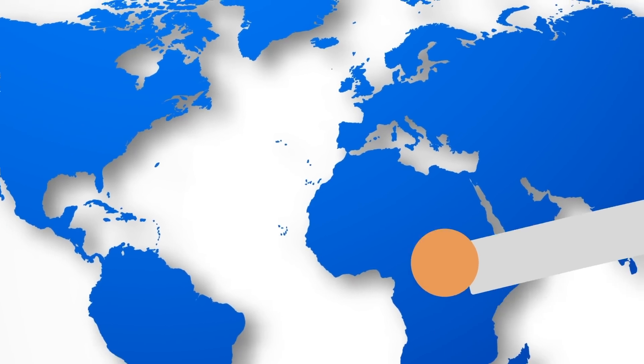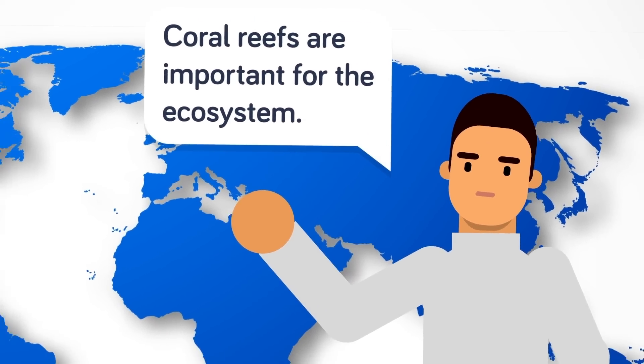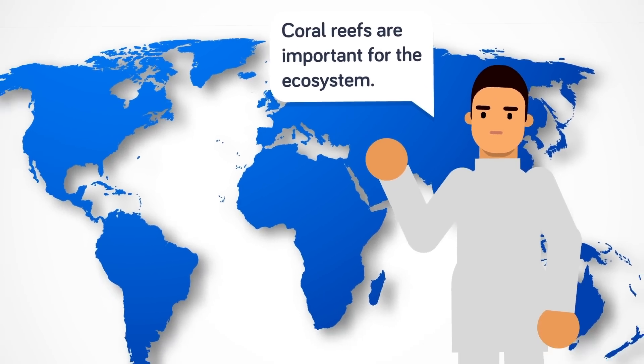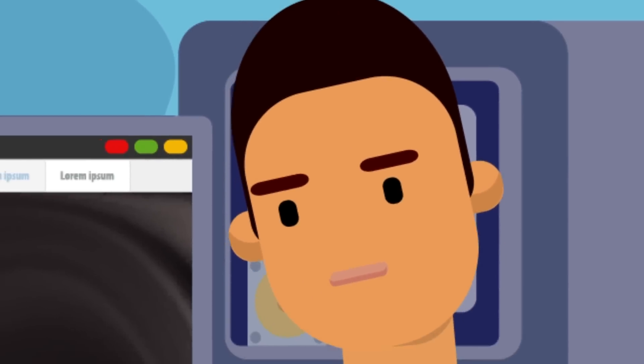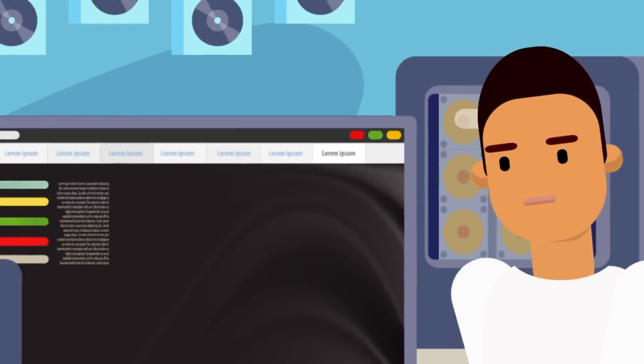Our oceans are incredibly important to maintaining a healthy planet, and if we lose coral reefs it will be devastating. Scientists in Hong Kong are using a similar strategy as their colleagues in Singapore, except instead of Legos they are using 3D printed structures to support the growth of corals.